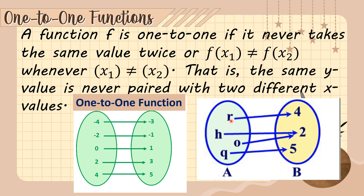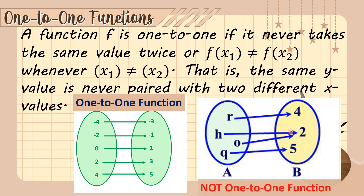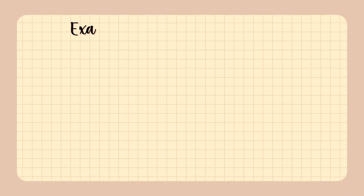In this next picture, the value 'a' is paired to 'b', but the values 'h' and 'o' are both paired to the same one value. That is an example of a function that is not one-to-one.